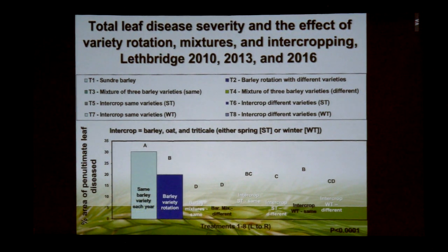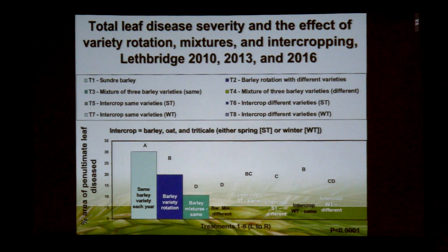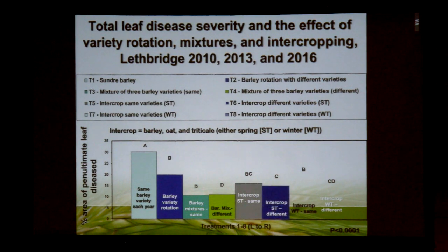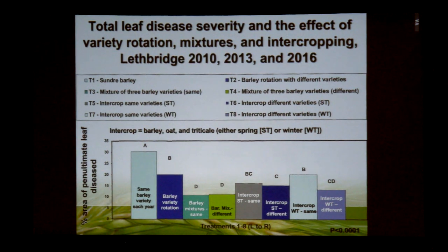At Lethbridge we had the same trial with Bob Blackshaw and Tim McAllister, and a very similar picture. Highest levels of disease with our continuous monoculture; risk was somewhat lower at Lethbridge due to drier conditions, but again adding diversity reduced our level of leaf disease significantly. We could manage that disease risk by simply adding diversity in the form of barley mixtures or intercrops.